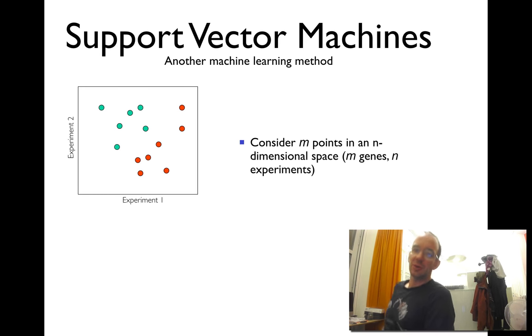An alternative to artificial neural networks are support vector machines. They have been very popular in the last decade and are easy to understand. Sometimes they are more powerful than artificial neural networks.